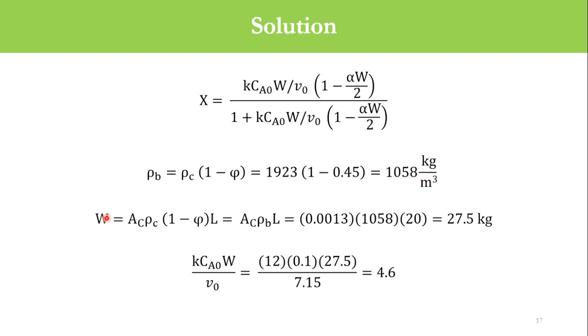Going to this equation, W equals AC (cross-sectional area) times ρC(1-φ) times L. This ρC(1-φ) is actually ρB, so AC·ρB·L. Cross-sectional area is 0.0013, bulk density is 1058, length is 20. Accordingly we get weight of catalyst as 27.5 kg.